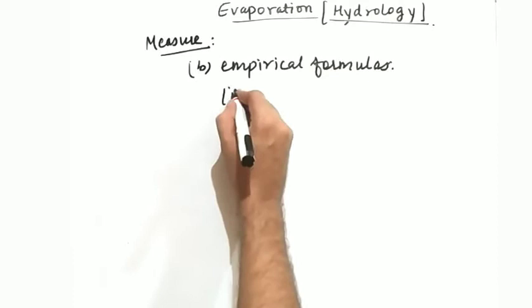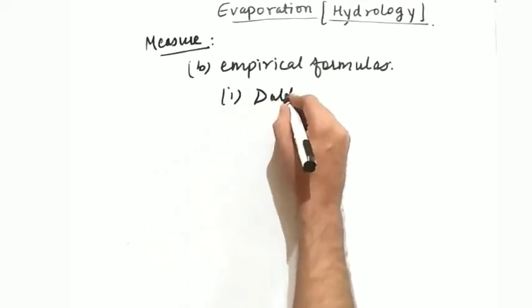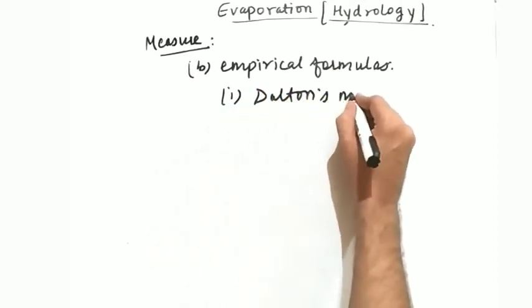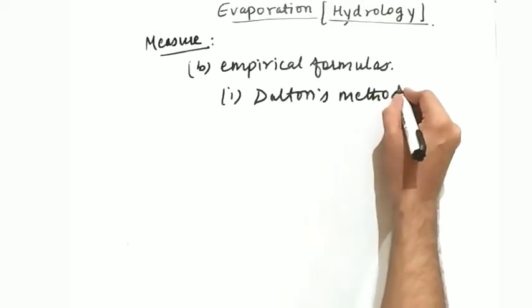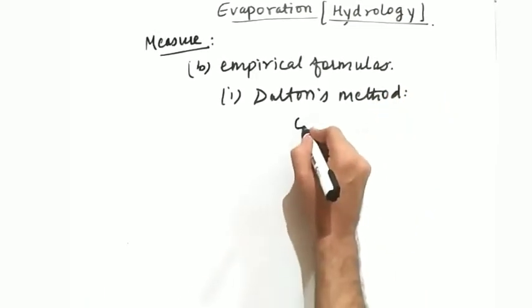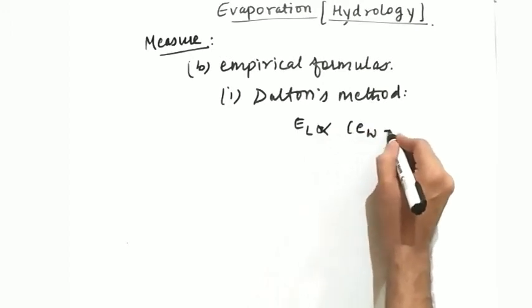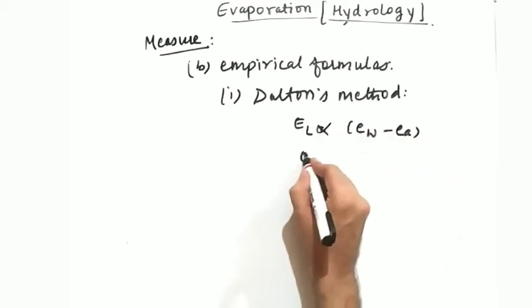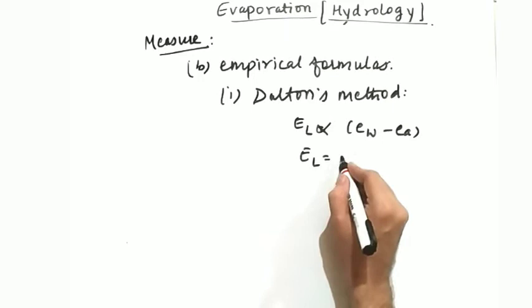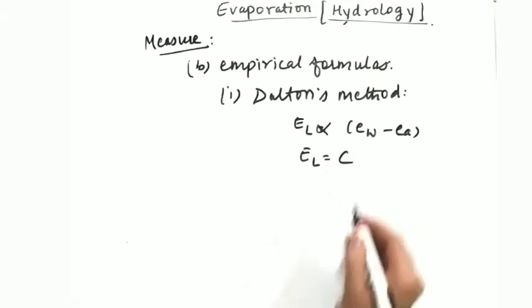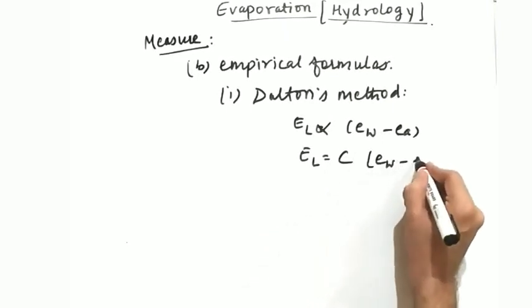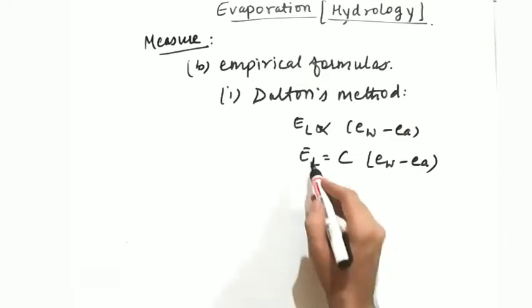The first method is Dalton's method. We have already studied the Dalton's method. The evaporation is equal to - see I already told you EL is proportional to Ew minus Ea. When you replace this proportionality sign, then you obtain a constant of proportionality and it is equal to Ew minus Ea times C. So this is the formula.